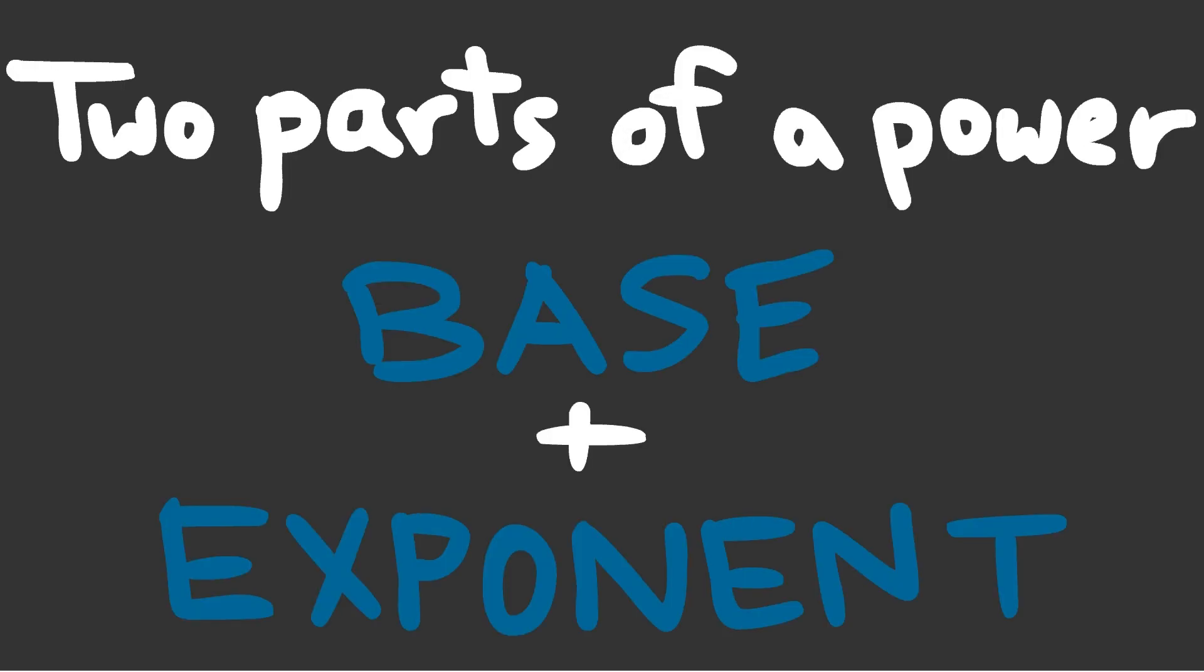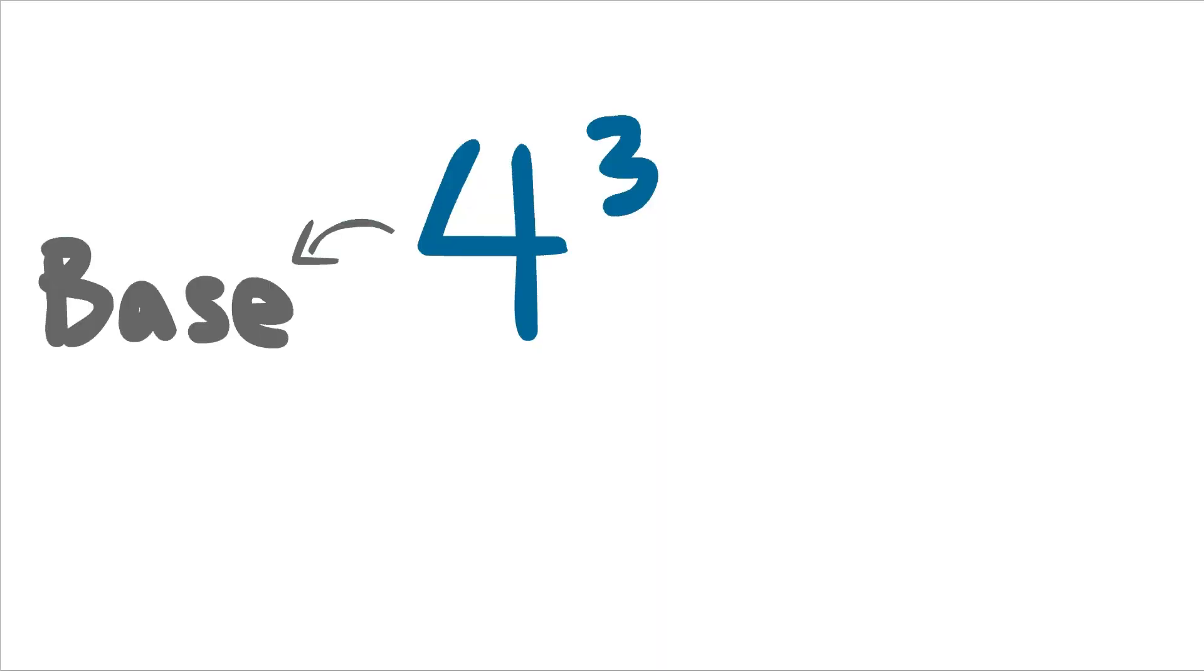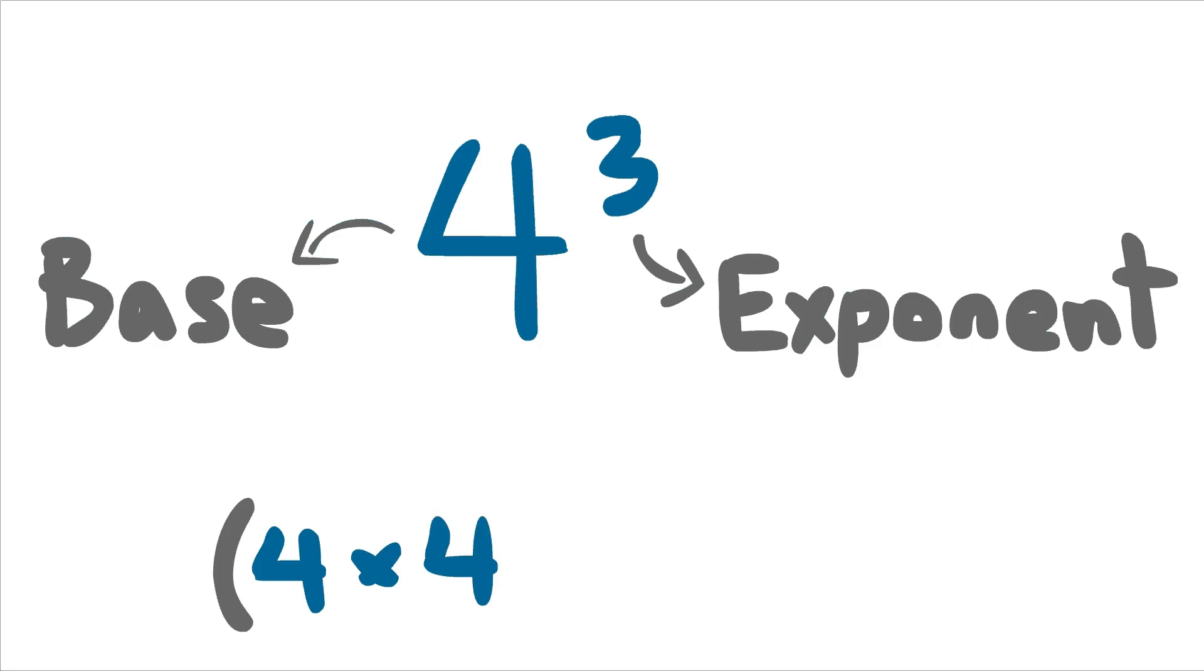There's two parts of a power, a base and an exponent. The base is on the bottom, it's the number being multiplied. The exponent's on the top, it tells you how many times the base is multiplied by.